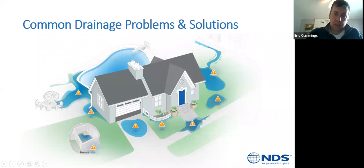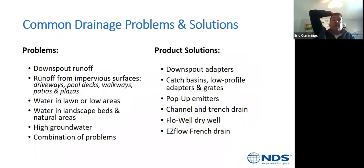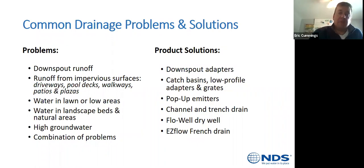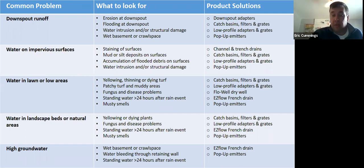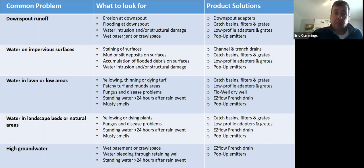Some of the problems we're going to be talking about here: downspout runoff, runoff from impervious surfaces, water in lawn or low areas, water in landscape beds and natural areas, high groundwater, and a combination of problems. Our solutions include downspout adapters, catch basins, low profile adapters and grates, pop-ups, channels, trench drains, flow wells, dry wells, and easy flow. This sheet is a nice cheat sheet to have when you're going out looking at a job. Contractors keep it laminated in their truck.